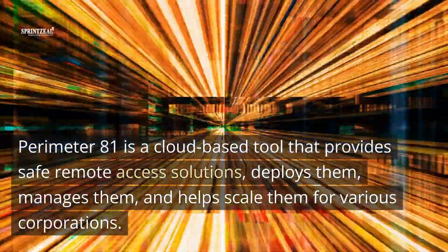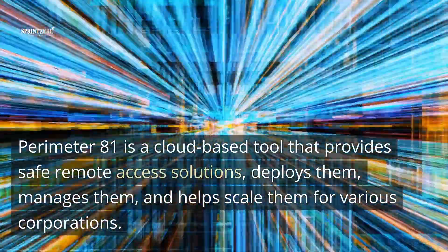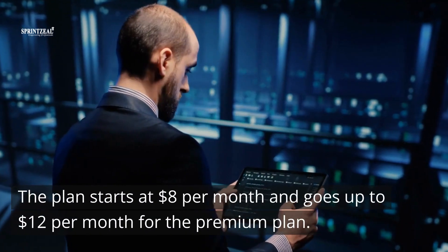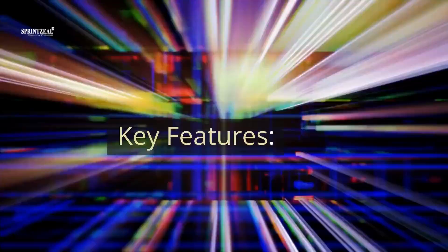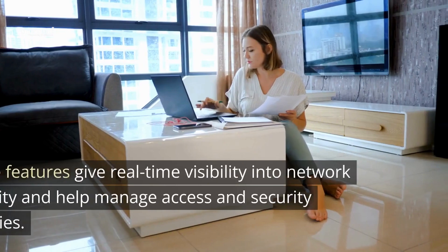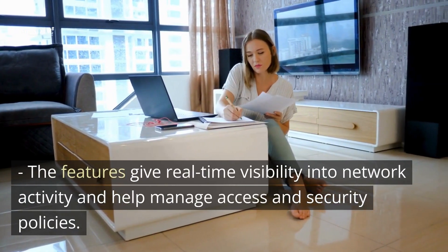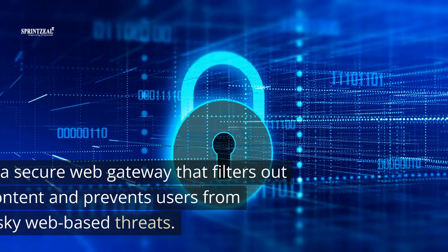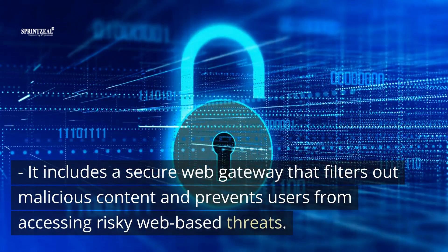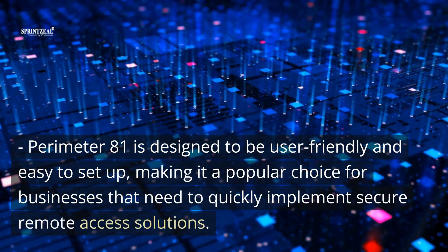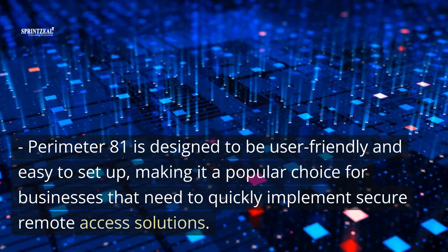Number 9: Perimeter81. Perimeter81 is a cloud-based tool that provides safe remote access solutions — deploying, managing, and scaling them for various corporations. Plans start at $8 per month and go up to $12 per month for the premium plan. Key Features: Creates secure and private cloud networks accessible from anywhere with any device, gives real-time visibility into network activity, manages access and security policies, and integrates a security mechanism to protect against unauthorized access to sensitive data. It includes a secure web gateway that filters out malicious content. Perimeter81 is designed to be user-friendly and easy to set up, making it popular for businesses needing quick, secure remote access solutions.